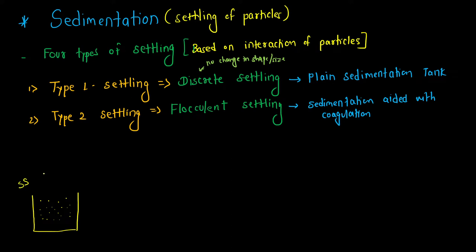Smaller than suspended solids, we have colloidal solids and dissolved solids. To remove these, the particle size is very, very small. So what we do is add some chemicals in the liquid so that these small particles stick to each other. The larger suspended particles have certain weight, so they settle easily at the bottom. But colloidal solids and dissolved solids have very little weight and will take a very long time to settle, or may not settle at all — they will keep on remaining in suspension.